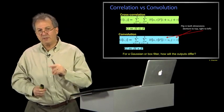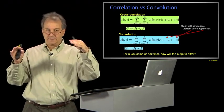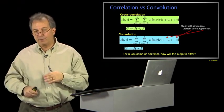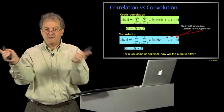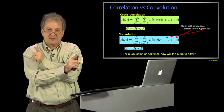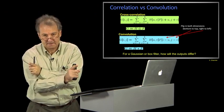So by the way, if I was using a Gaussian or a box filter, how will the outputs be different for correlation and convolution? That is, what happens if I flip my Gaussian? Answer, nothing. For a circularly symmetric or for a symmetric filter, whether I do convolution or correlation doesn't matter. It is going to matter to us in the next lecture when we take derivatives in one direction or the other. But if you have a symmetric filter, it doesn't matter.